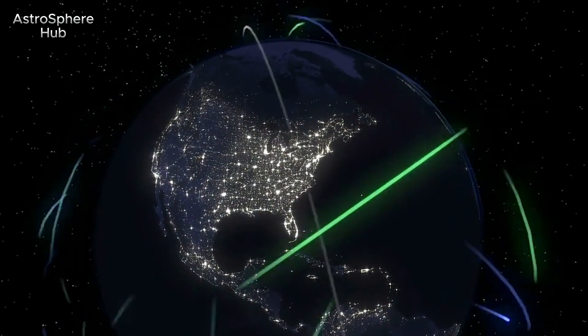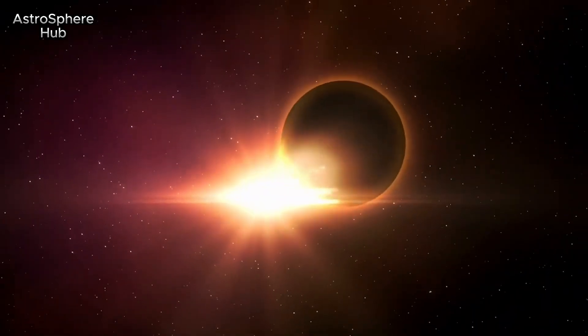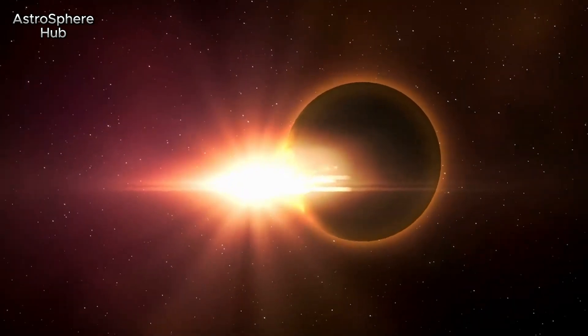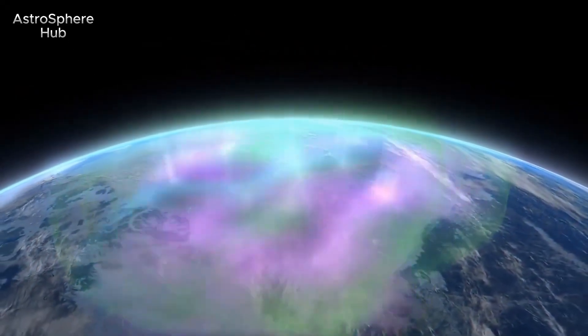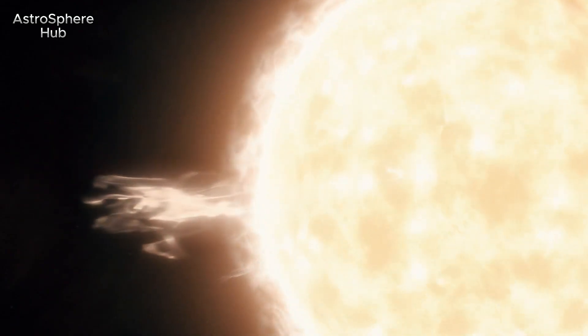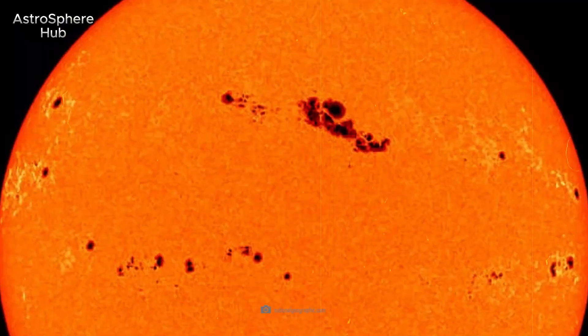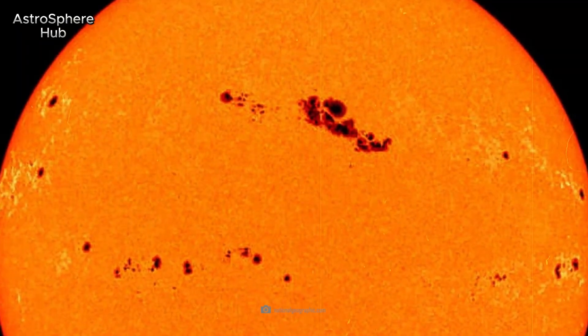The intense magnetic activity of AR 3664 can lead to high-energy solar flares and coronal mass ejections alike. Like other sunspots, AR 3664 will change over time and eventually dissipate. Sunspots typically have life cycles of days to weeks, sometimes months.